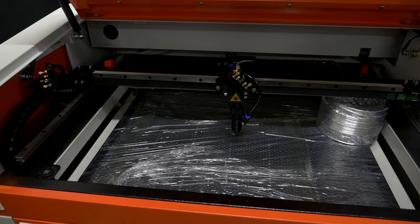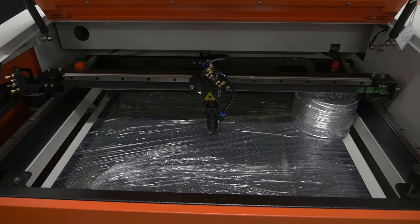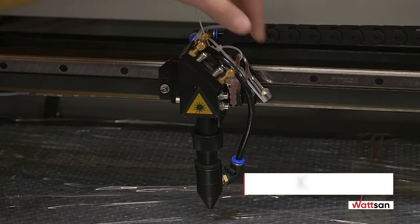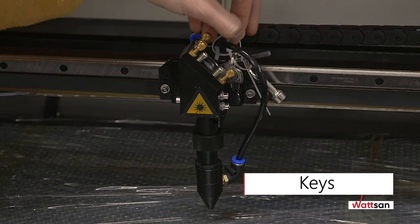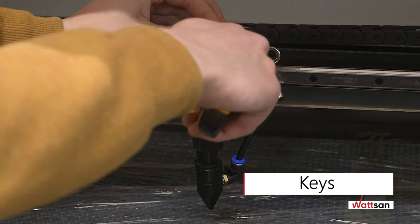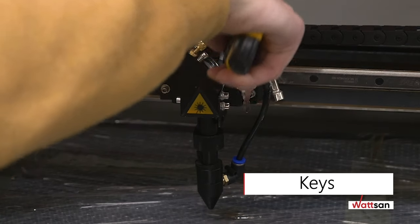The complete set includes keys that hang from the head. A triangular one to open the slide, rear, and front panels of the machine, and a regular one to power up the laser tube.